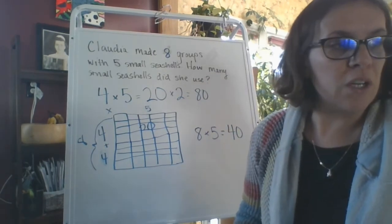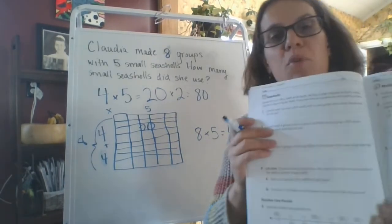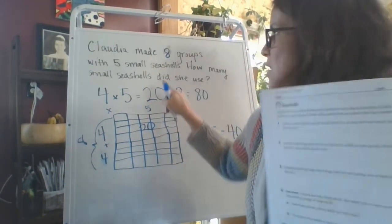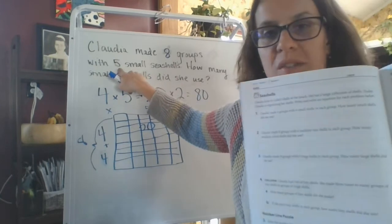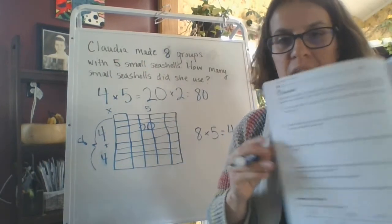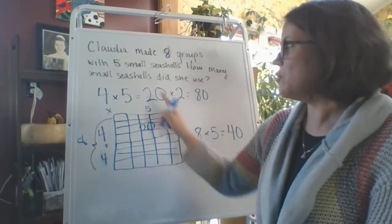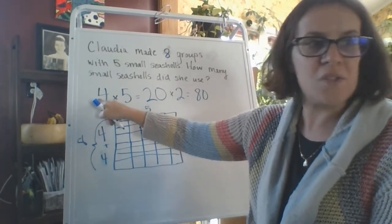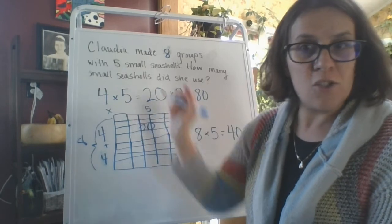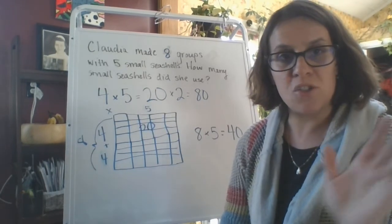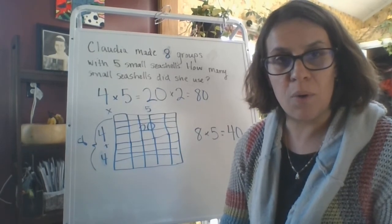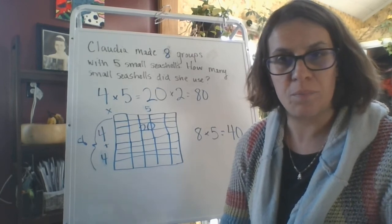Okay, and you're going to practice the same type of problem, except instead of five small seashells in each group, she is going to use six. So that's what you're doing today. You're really just practicing. You're doubling your fours and doubling your threes. So good luck. And if you have any questions, just email me or post a message on Google Classroom. Good luck. Bye.